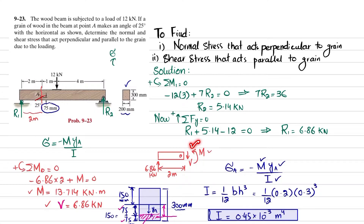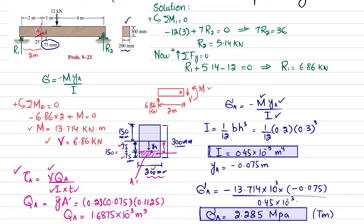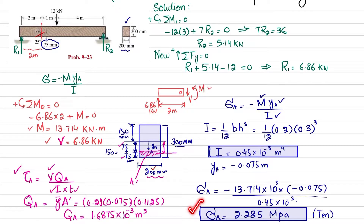After cutting, we get the moment at point A and the shear force. Then we find the bending stress at point A, given by the bending stress formula. For this rectangular beam, the moment of inertia I is calculated, and Y_A is the distance from the neutral axis to point A, which is minus 75 millimeters or minus 0.075 meters. Substituting M_A, Y_A, and I into the formula gives sigma_A as a positive value, indicating tensile stress.